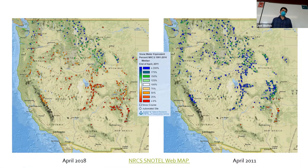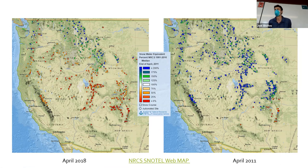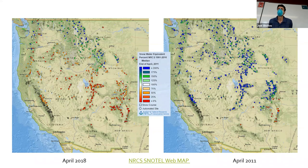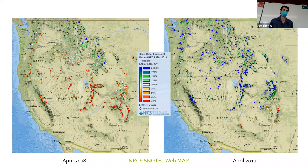We have these SNOTEL sites across the west — they're really important. Why do we have this network? You can forecast how much water you're going to have when it melts and goes into the rivers. This is the water supply for the west — these are our water tanks, our water towers. All the water that we use comes from snowmelt by and large.